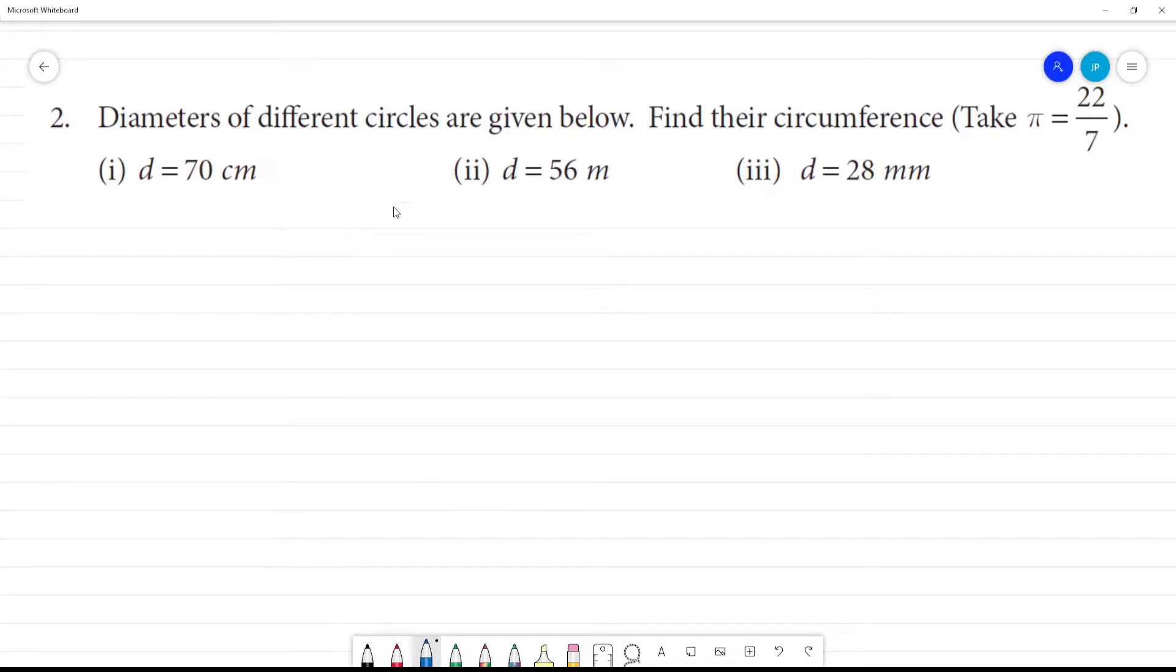Diameters of different circles are given below. Find their circumference. First one, diameter is equal to 70 centimeters. Then what is radius? Radius is equal to diameter by 2, which is 70 by 2.